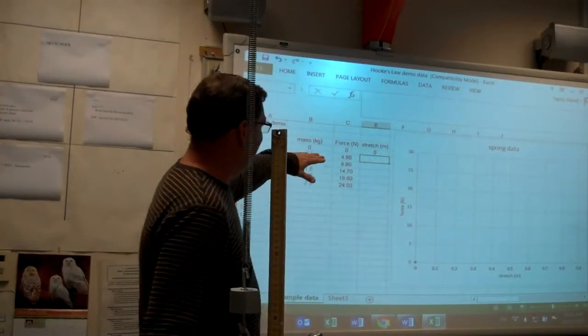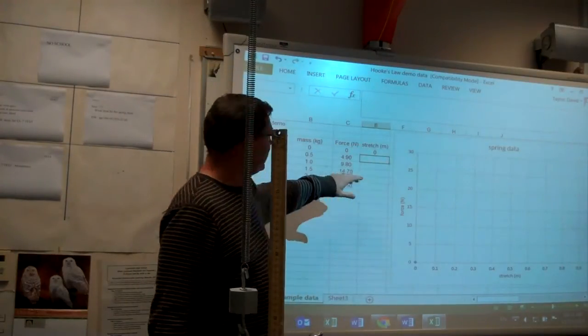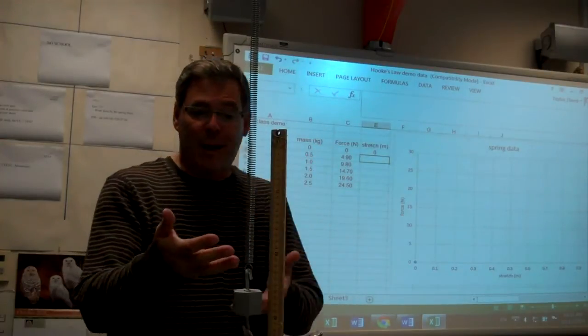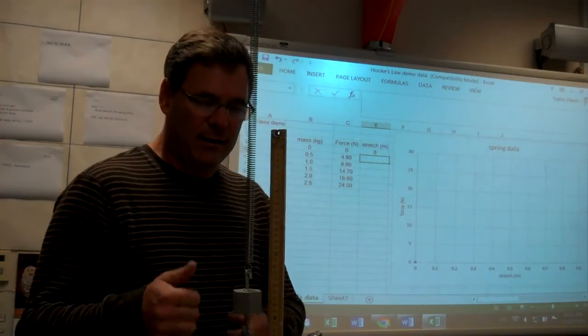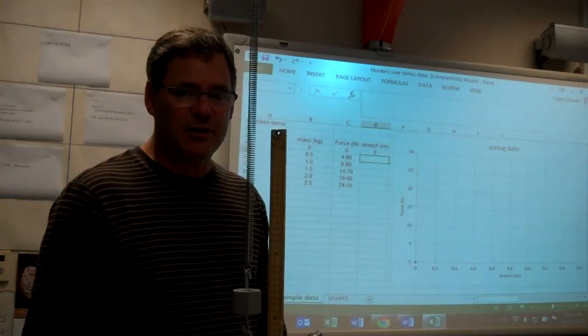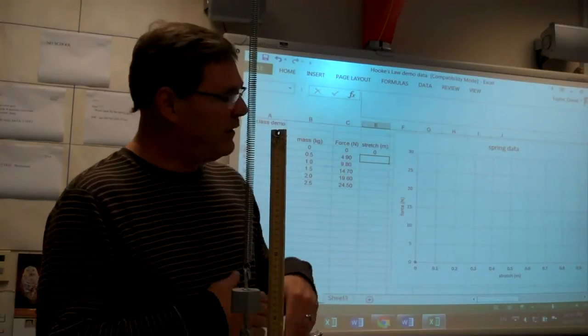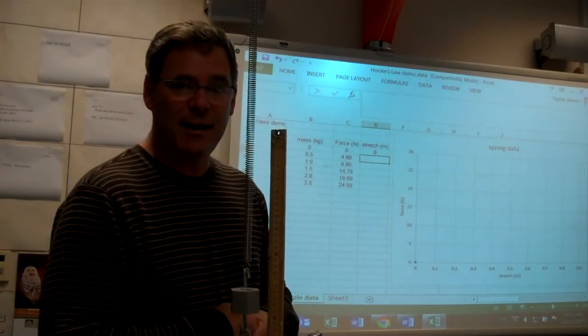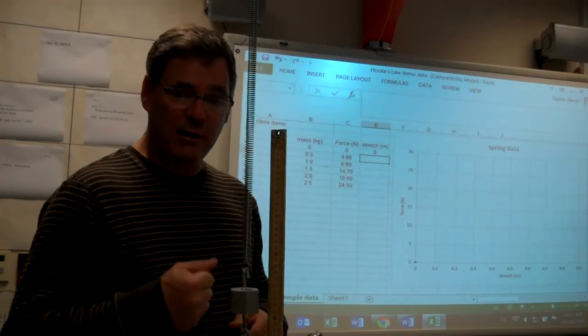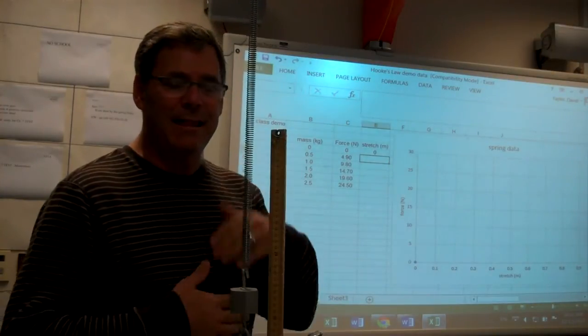And I'm going to enter my data in a table. And the table will have the amount of weight that's pulling down on the spring and how far the spring is stretched. And I'm going to make a graph to examine the relationship between the force pulling on the spring and the amount of stretch.